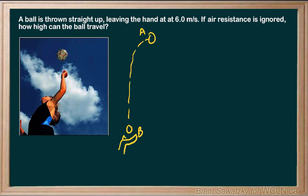In the before situation, let's think about energy. We consider the starting point where h equals zero — the height is zero. So at the beginning we don't have any potential energy since h is zero. But the ball is just being released with a velocity of 6 meters per second, so it definitely has kinetic energy.